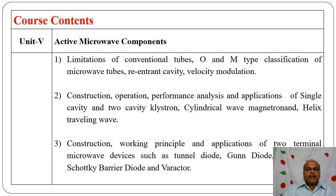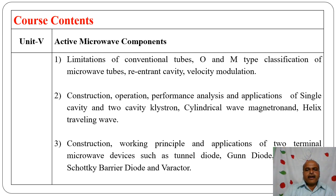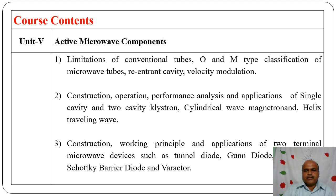In the klystron, we study the bunching process and velocity modulation. Then construction, working principle, and application of two-terminal microwave devices such as tunnel diode, Gunn diode, Schottky barrier diode, and varactor diode. These are very important devices used in microwaves — tunnel diode and Gunn diode operate in the negative resistance region.